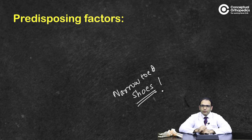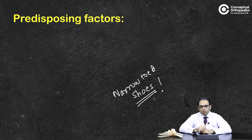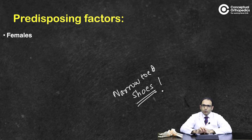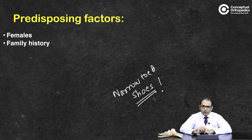Talking about the intrinsic factors, which are not modifiable — there are many, but the most common are female sex and a genetic tendency. A family history of hallux valgus is a significant predisposing factor for causing bunion in the next generation as well.